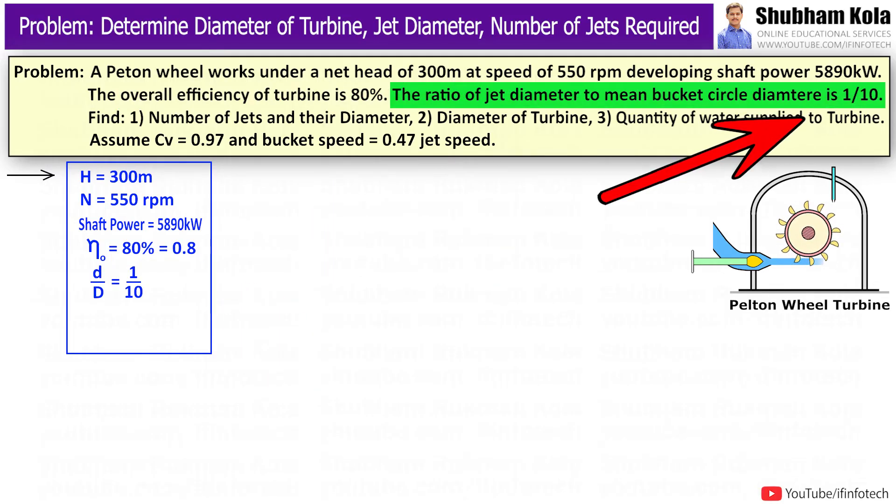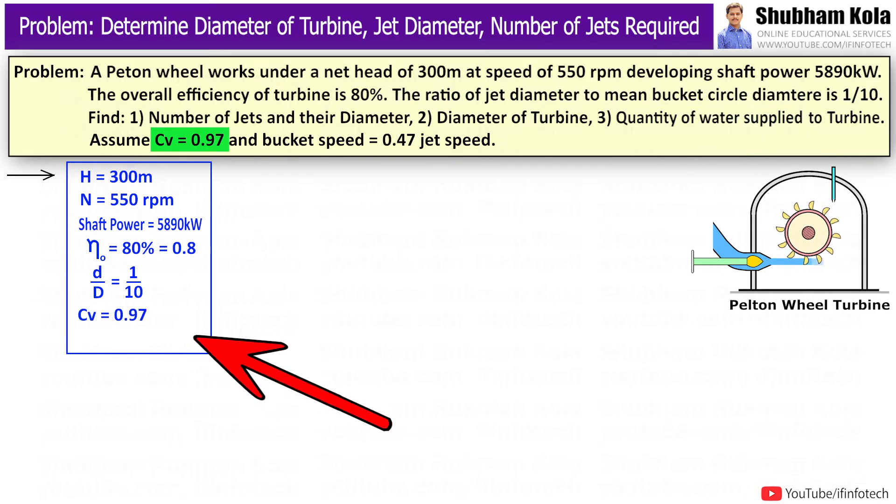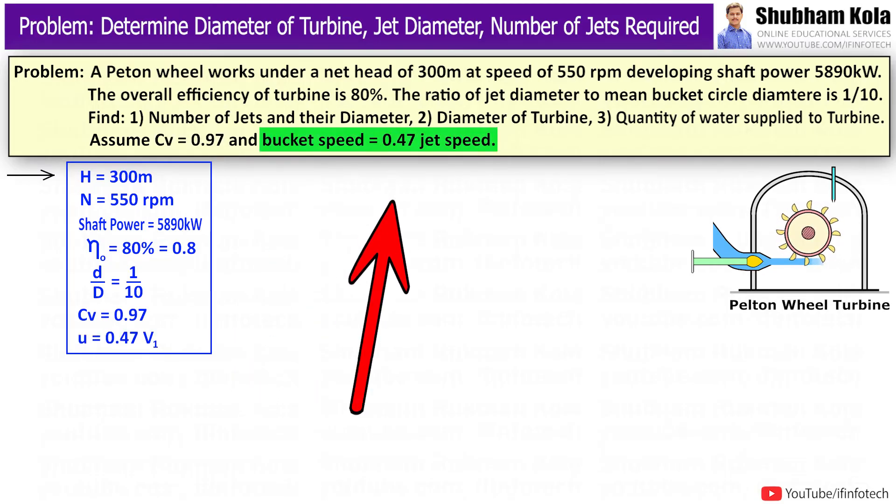Ratio of d to D is given as 1 to 10. Coefficient of velocity CV equals 0.97, and bucket speed equals 0.47 jet speed.